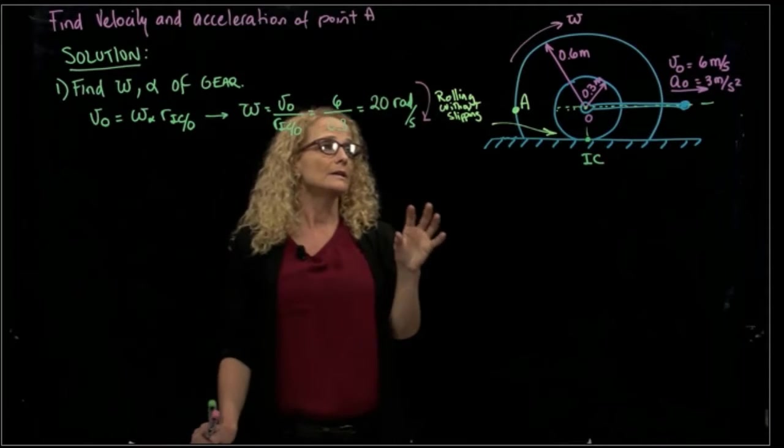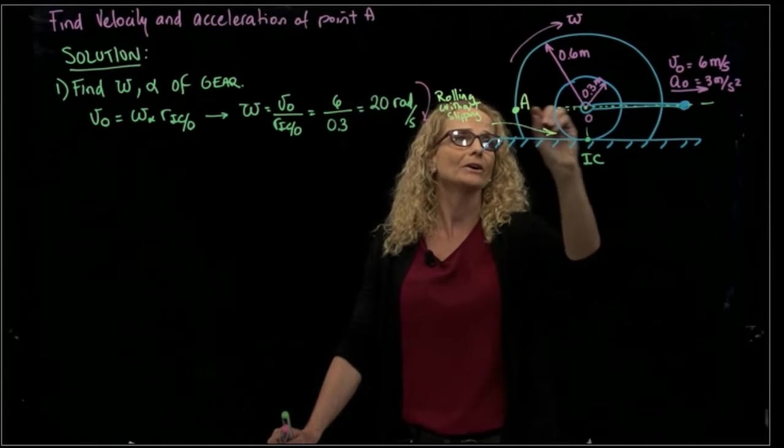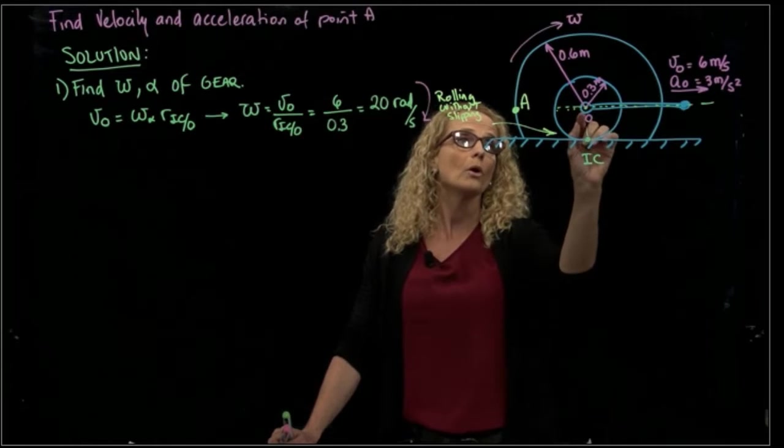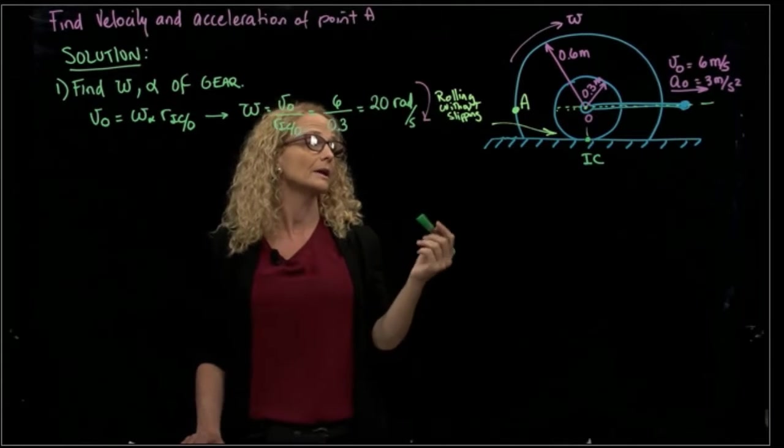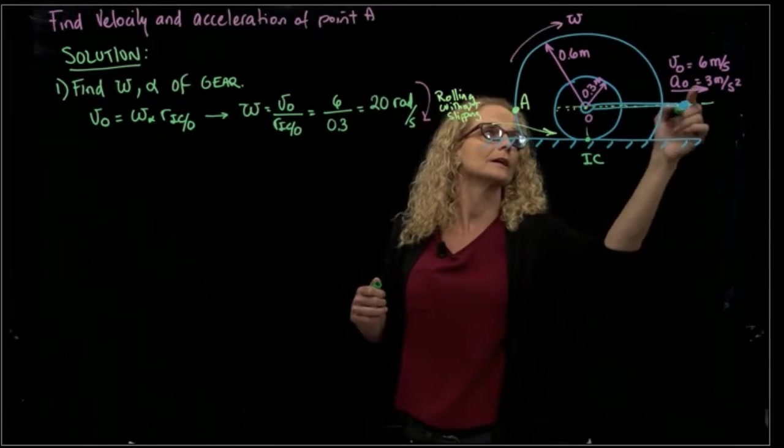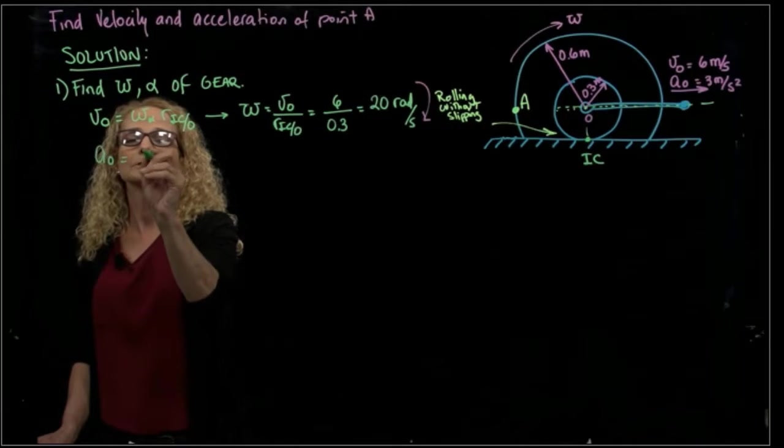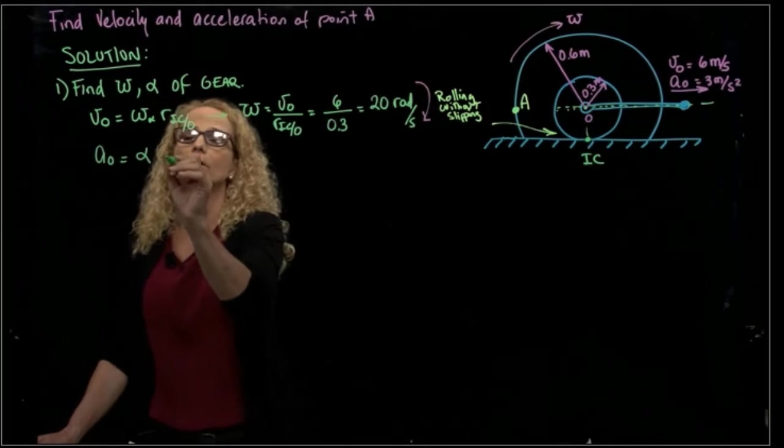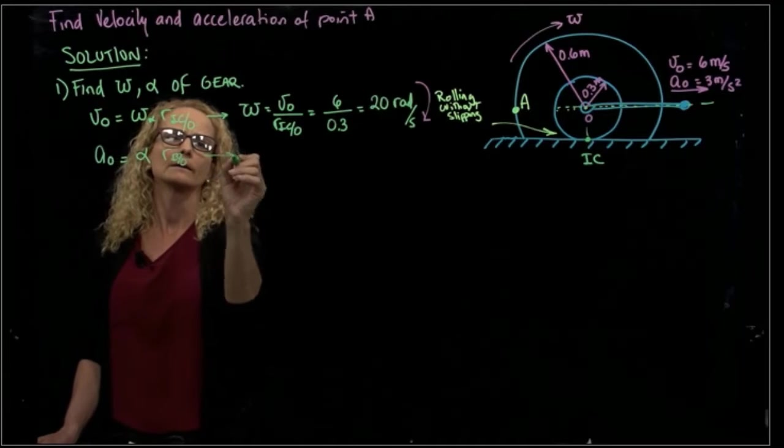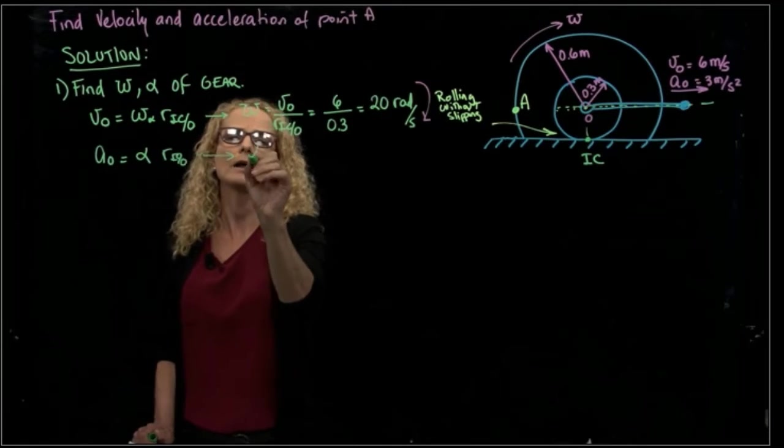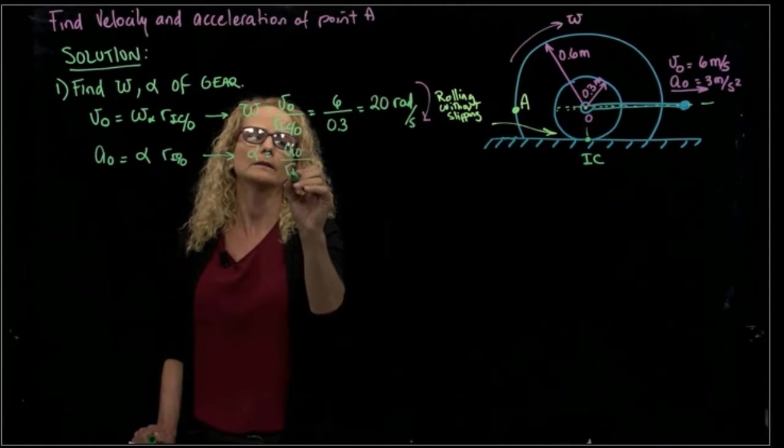I can do this exactly the same for the acceleration because it has a linear trajectory point O. It does not have any normal acceleration. It only has tangent acceleration. So I can actually say that my tangent acceleration will be angular acceleration times that same distance.